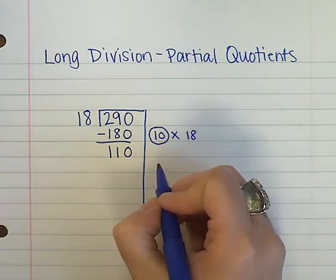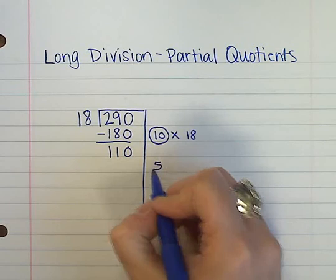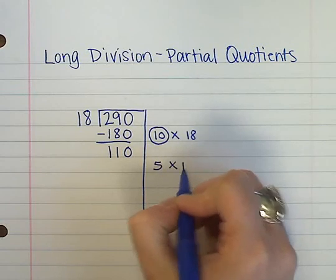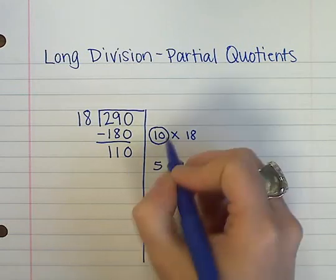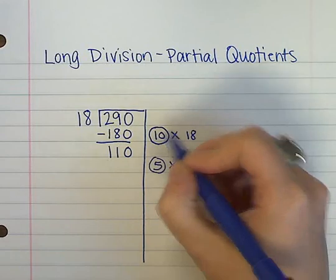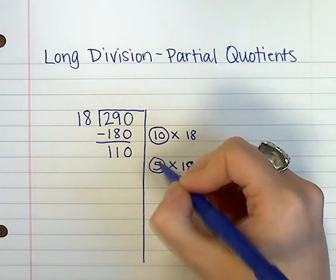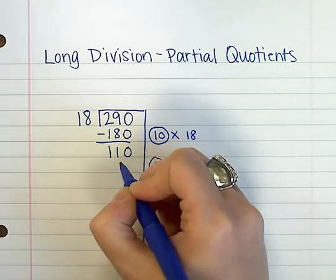So what you'll notice students doing is, instead of 10, they might try 5 groups of 18. Since 5 is half of 10, 90 is half of 180.